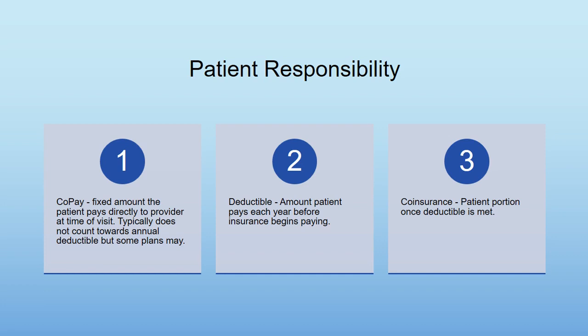There are three patient responsibility classes. There's the co-pay, which is the fixed amount the patient pays directly to the provider at the time of visit. This typically does not count towards any annual deductible, though some plans it may — it's usually a small amount like $10, $25, or $30 depending on the plan. There's the deductible, which is the amount the patient pays each year before their insurance begins paying. And there's coinsurance, which is the portion the patient pays once the deductible is met. This is usually expressed as a percentage — you may see 90-10 or 80-20, where the second number, the 10% or 20%, is the patient's coinsurance responsibility.